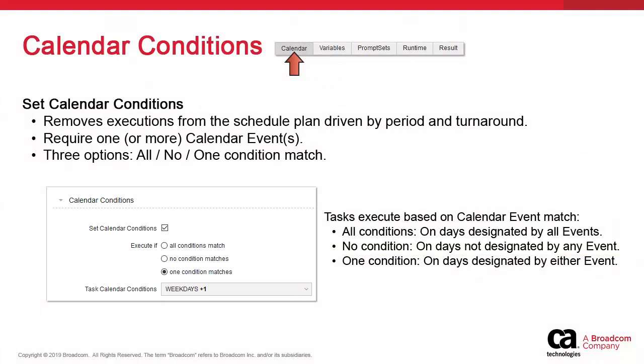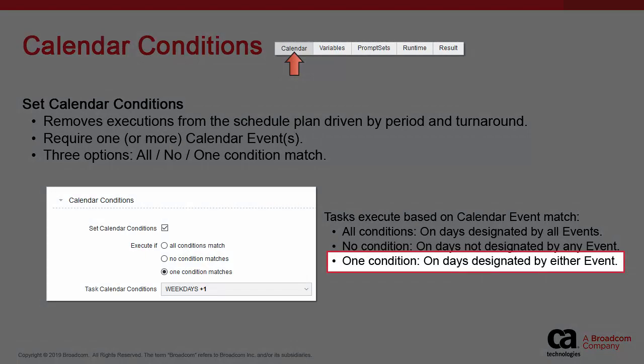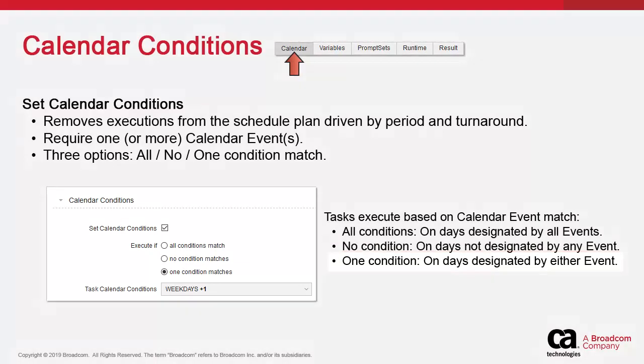The final option is one condition matches. The task executes on every day designated by either calendar event. If we have two events — weekdays and first of the month — the task executes Monday through Friday and would also execute on January 1st, even if it were a Saturday.